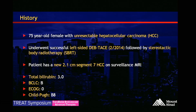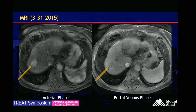Here, you can see that the tumor exhibits arterial enhancement and portal venous washout with pseudo-capsule on the portal venous phase on MRI.